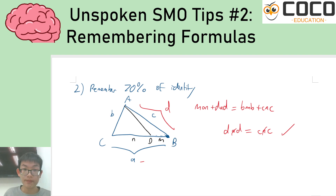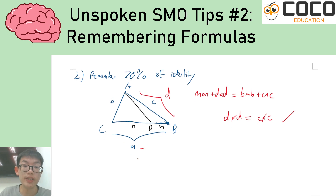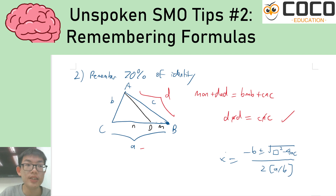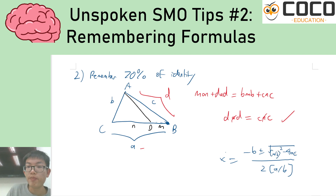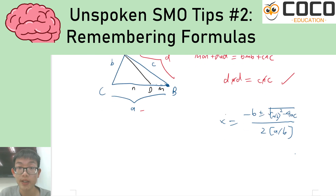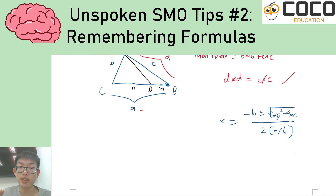You can use this approach quite a lot. For example, if you remembered that the quadratic formula is something like x equals minus b plus or minus the square root of something squared minus 4ac, all over two times either a or b, and you cannot remember whether the denominator is a or b — well, pick the simplest scenario to figure things out.